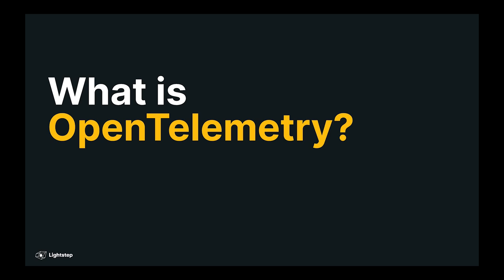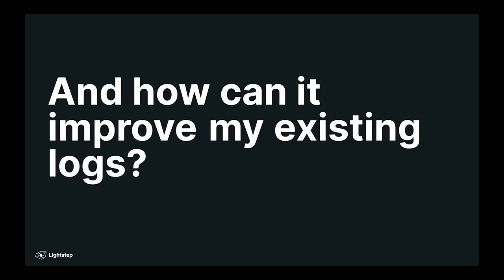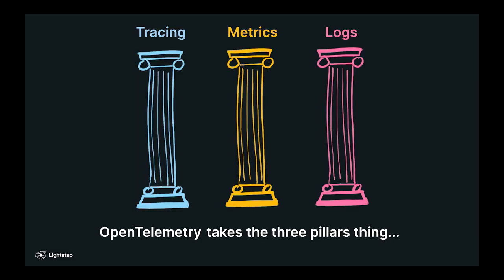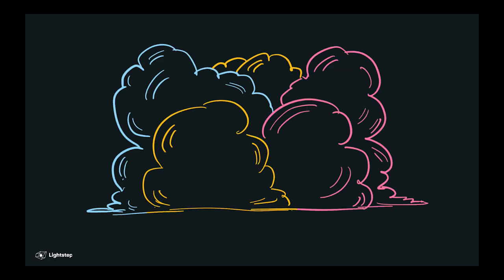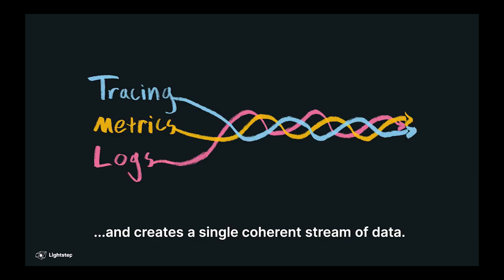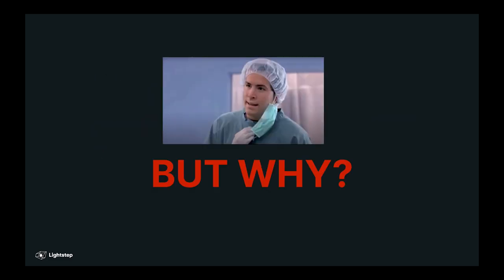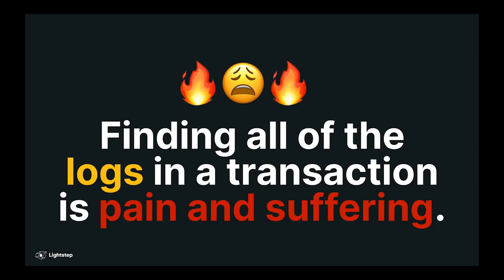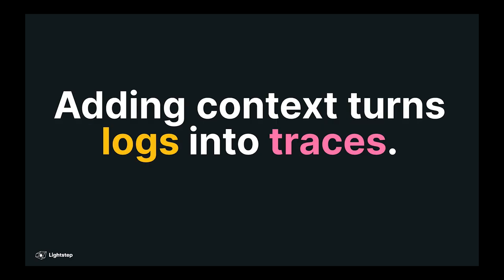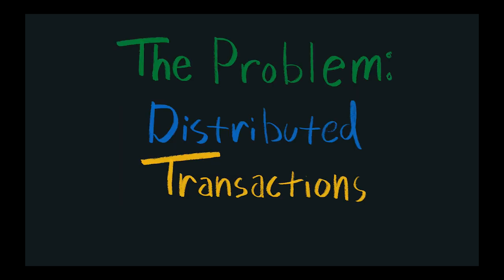So what is OpenTelemetry and how can it improve these existing logs? In short, OpenTelemetry is a project that takes the whole three pillars concept of observability, smashes it into rubble, and turns it into a single braid of coherent cross-correlated data. But why would that actually be helpful if I already have logs? The answer is that finding all of the logs in a transaction is a horrible experience because you lack context. And adding the context that you need turns your logs into traces. Allow me to explain by starting with the problem: distributed transactions.